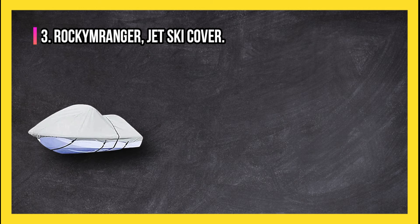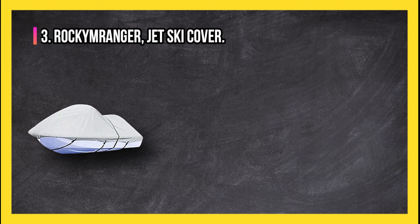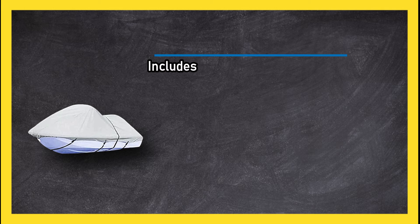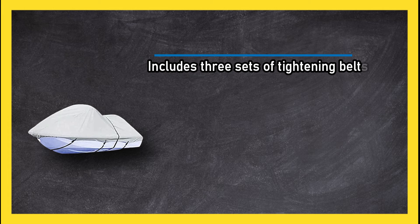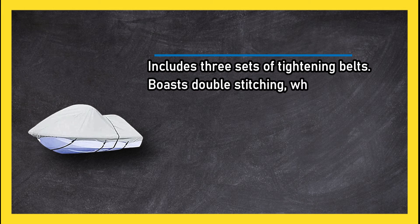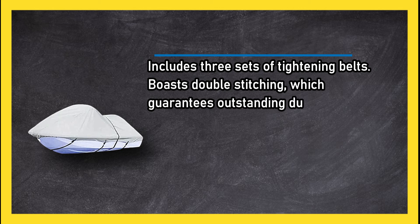At number 3, Rocky Ranger Jet Ski Cover. Includes 3 sets of tightening belts. Boasts double stitching, which guarantees outstanding durability.